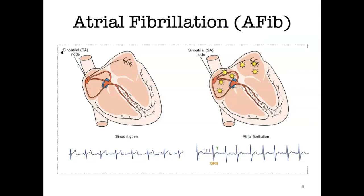Atrial fibrillation is a disorganized, very rapid, irregular atrial rhythm resulting in an increased or decreased ventricular rate. P waves are very hard to distinguish because they are firing so quickly — this is referred to as fibrillation. Not all P waves conduct through the AV node to stimulate the ventricles. Every once in a while, one P wave gets through and causes normal conduction. There are more P waves than QRS complexes, and the rate is very irregular.